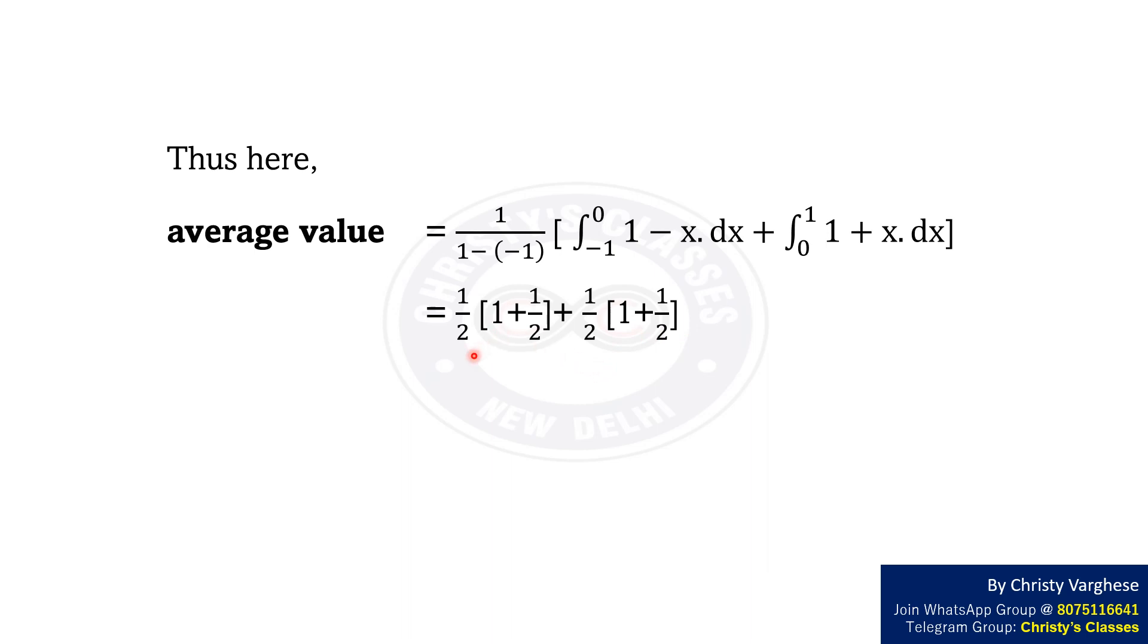This equals 1 by 2 into 1 plus 1 by 2 plus 1 by 2 into 1 plus 1 by 2. That is, 1 by 2 into 3 by 2 plus 1 by 2 into 3 by 2. This equals 3 by 2, that is, 1.5.